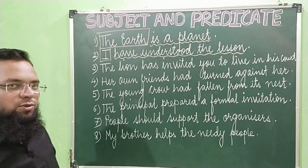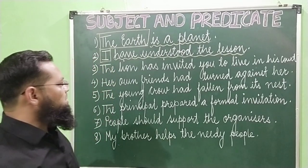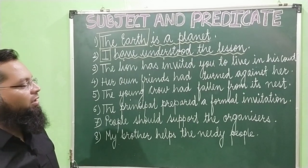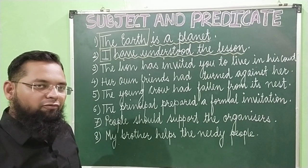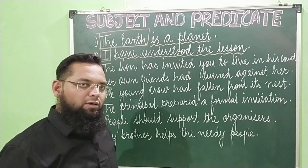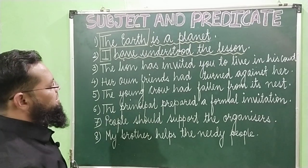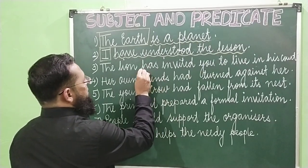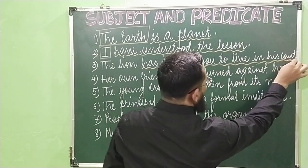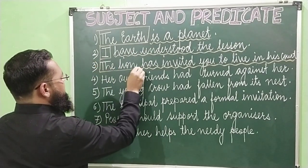It is very easy to identify the predicate. Third sentence: 'The lion has invited you to live in his court.' Again, it is very easy for us to identify the predicate. The helping verb in this sentence is 'has.' So from 'has' till the end will be the predicate, and 'the lion' will be the subject.